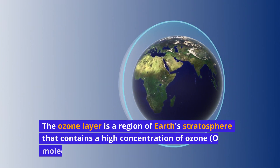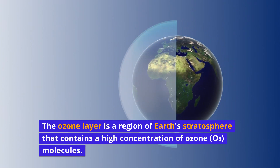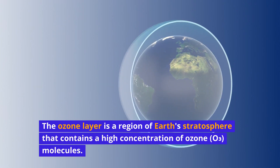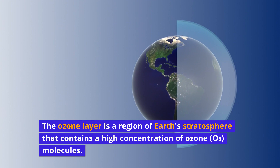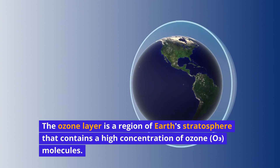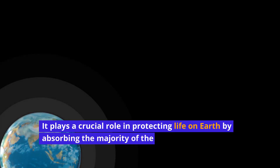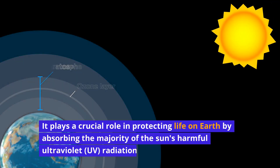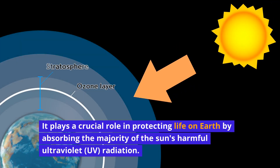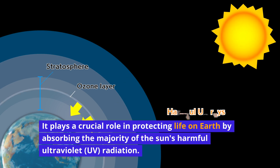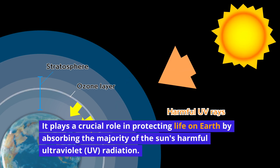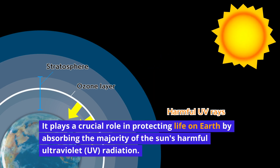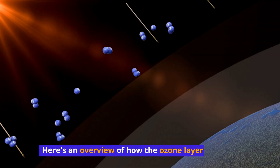The ozone layer is a region of Earth's stratosphere that contains a high concentration of ozone (O3) molecules. It plays a crucial role in protecting life on Earth by absorbing the majority of the sun's harmful ultraviolet (UV) radiation.